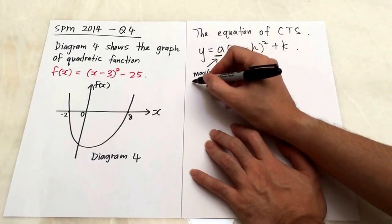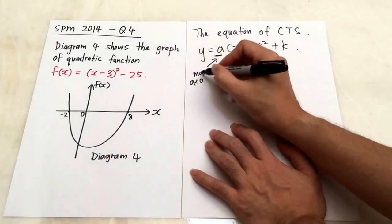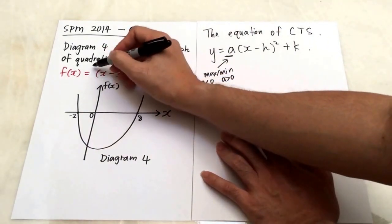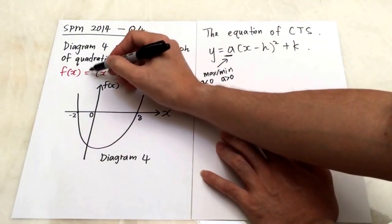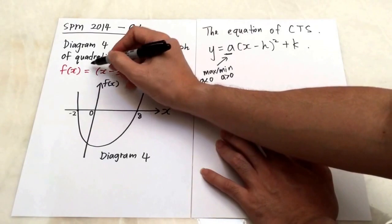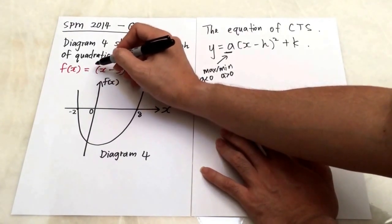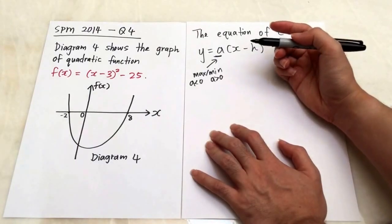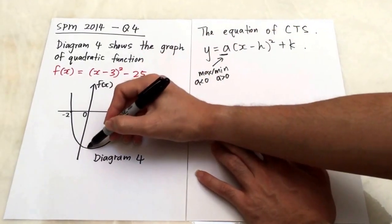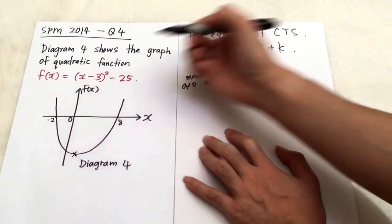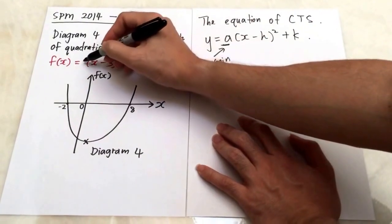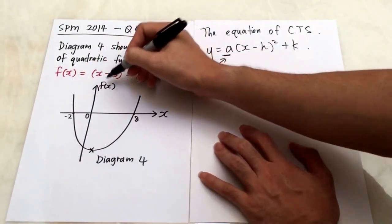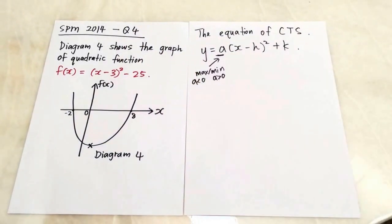If A is less than 0, it's a maximum. If A is bigger than 0 — like in this case where A is positive 1, which is invisible but means positive 1 — then it's a minimum point. If you have a negative A, your graph will look like an n-shape, giving you a maximum graph.